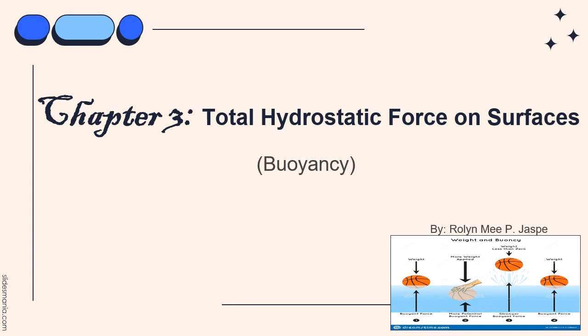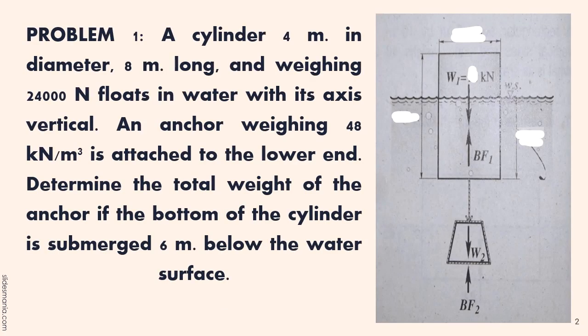Good day everyone. This is Chapter 3: Total Hydrostatic Force on Surfaces — Buoyancy. Problem 1: A cylinder 4 meters in diameter, 8 meters long, and weighing 24,000 newtons floats in water with its axis vertical. An anchor weighing 48 kilonewtons per cubic meter is attached to the lower end. Determine the total weight of the anchor if the bottom of the cylinder is submerged 6 meters below the water surface.